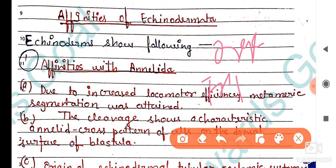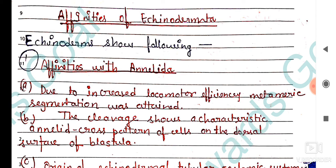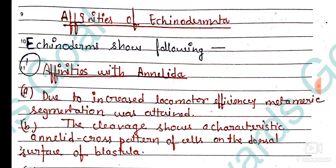Echinodermata are triploblastic, meaning they have three body layers: ectoderm, mesoderm, and endoderm. If you talk about symmetry, the adults and larvae differ.